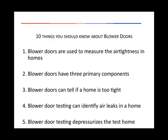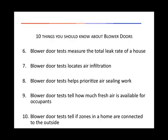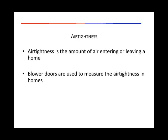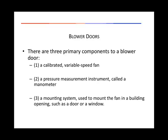Blower doors have three primary components. Air tightness is the amount of air entering or leaving a home, and blower doors are used to measure the air tightness in homes. There are three primary components to a blower door: 1. A calibrated variable speed fan. 2. A pressure measurement instrument, also called a manometer. 3. A mounting system used to mount the fan in a building opening such as a door or a window.